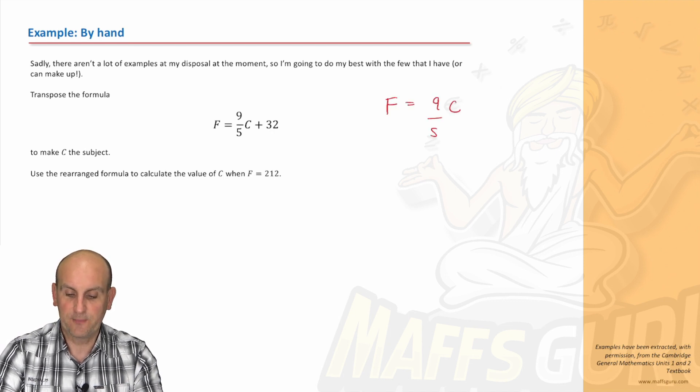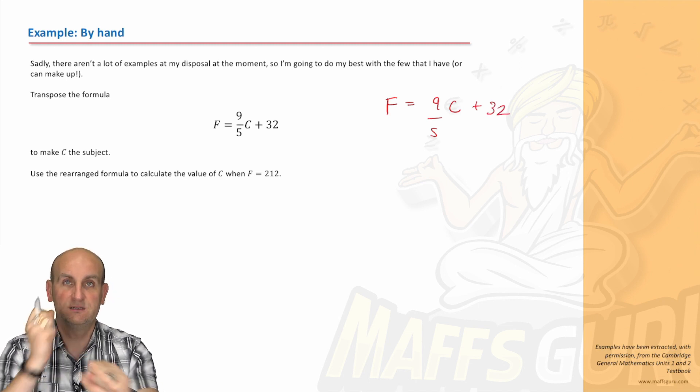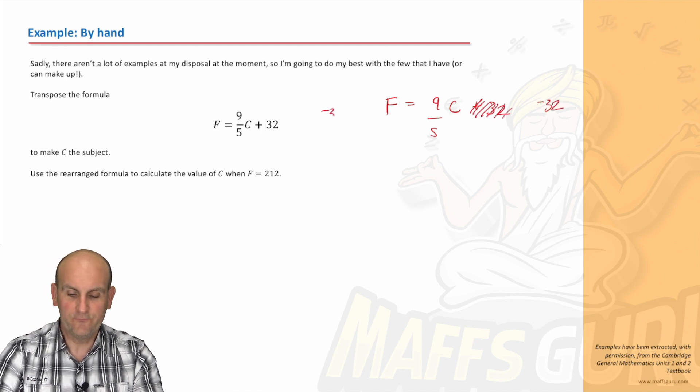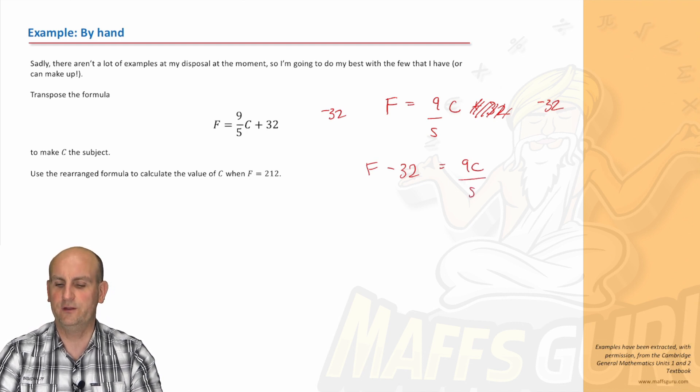So we have F equals 9 on 5 C plus 32. I want C on its own; there is something stuck to it. I'm going to get rid of the plus 32 first by subtracting 32 from both sides. We know how to do that. F stays at the front of the queue and the minus 32 goes there, which gives me 9C on 5. Now you're going to say, hold on a moment, that wasn't in the question.